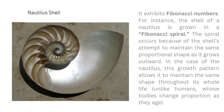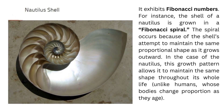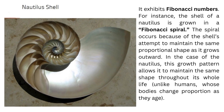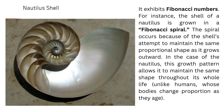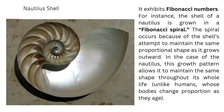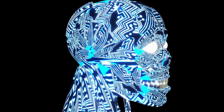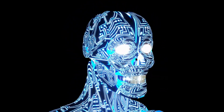The nautilus shell exhibits Fibonacci numbers. The shell of a nautilus is grown in a Fibonacci spiral. The spiral occurs because of the shell's attempts to maintain the same proportional shape as it grows outward. This growth pattern allows it to maintain the same shape throughout its whole life, unlike humans, whose bodies change proportionally as they age.